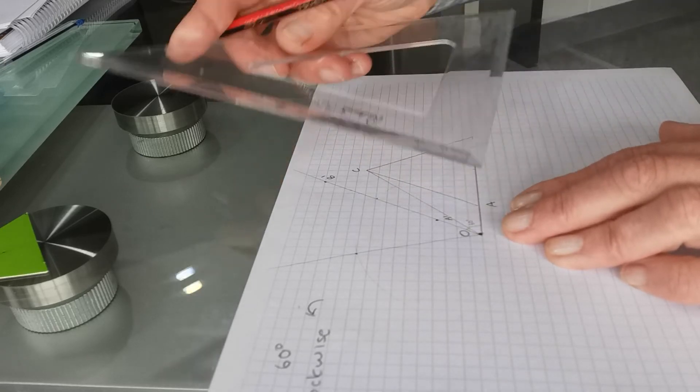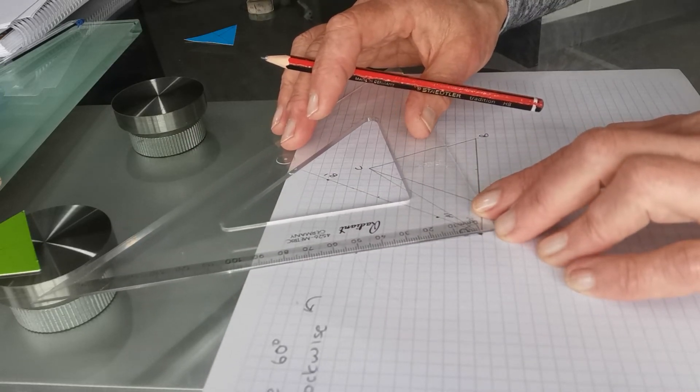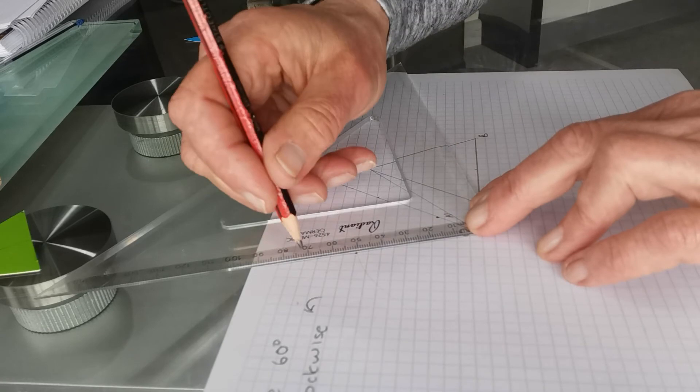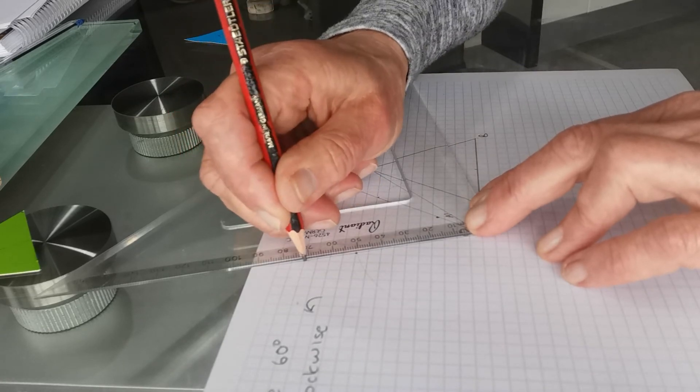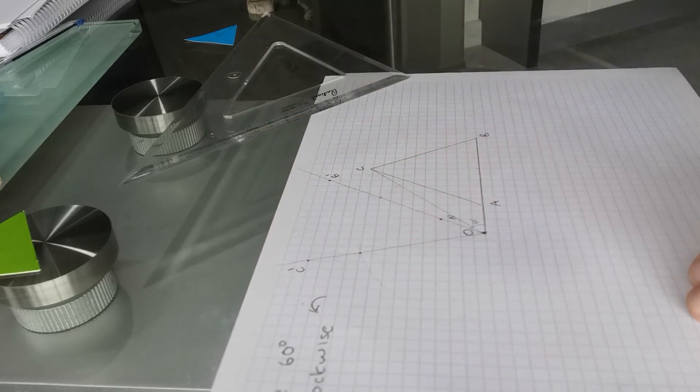72 millimeters or 7.2 centimeters. So measure 7.2 centimeters up here. Put a dot and quickly label that C prime.